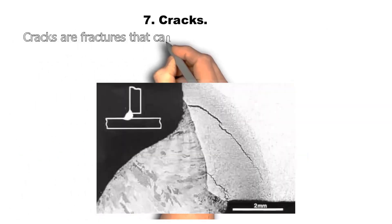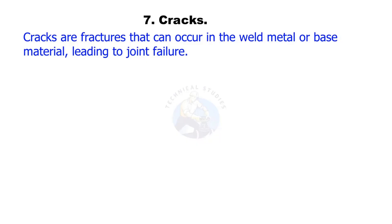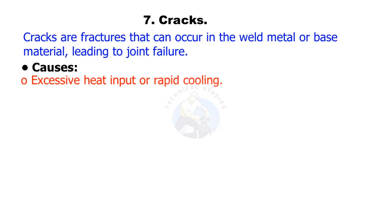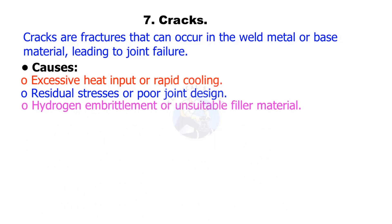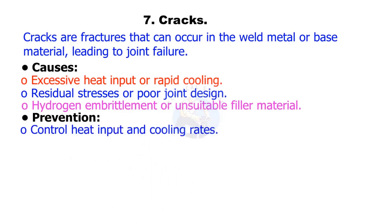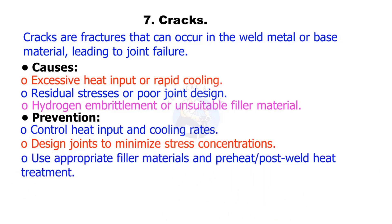Cracks are fractures that can occur in the weld metal or base material, leading to joint failure. Causes include excessive heat input or rapid cooling, residual stresses or poor joint design, and hydrogen embrittlement or unsuitable filler material. Prevention: control heat input and cooling rates, design joints to minimize stress concentrations, and use appropriate filler materials with preheat and post-weld heat treatment.